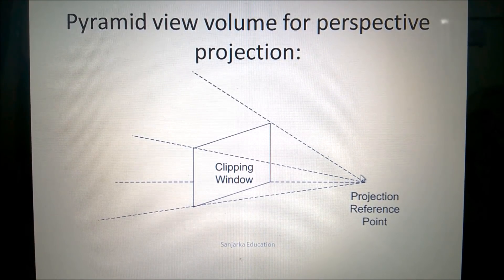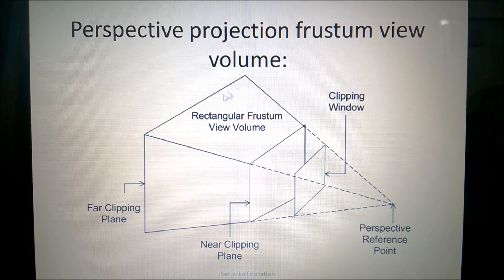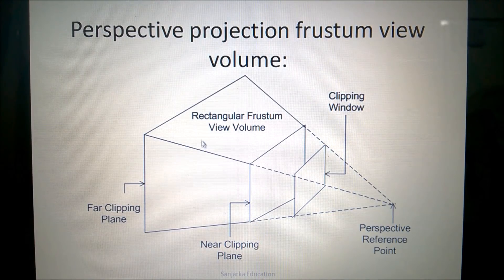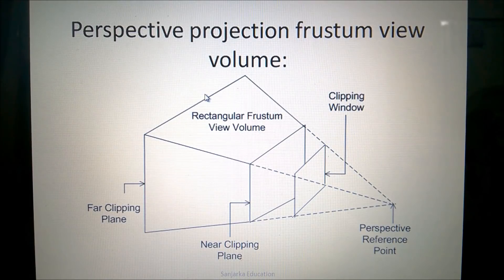Next we will see what is a frustum. The infinite view volume has been truncated. We have truncated with the far clipping plane and at the near clipping plane. The portion between the far clipping plane and the near clipping plane is known as the rectangular frustum view volume, and also you can say perspective projection frustum view volume.